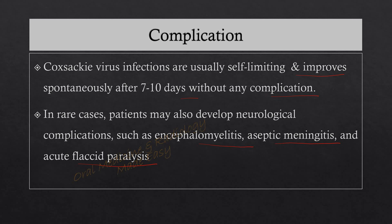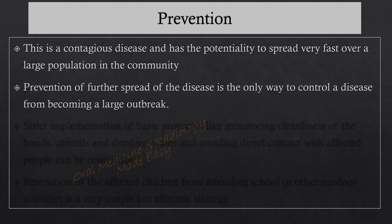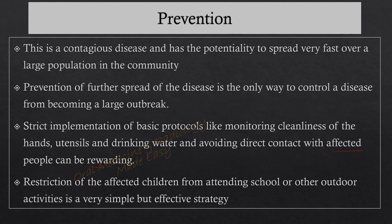In rare cases, patients may develop neurological complications such as encephalomyelitis, aseptic meningitis, and acute flaccid paralysis. As HFMD is contagious and can spread rapidly across a large population, prevention is the only way to control it from becoming a large outbreak. Strict implementation of basic protocols — such as monitoring cleanliness of hands, utensils, and drinking water, avoiding direct contact with affected people, and restricting affected children from attending school or outdoor activities — are effective preventive strategies.